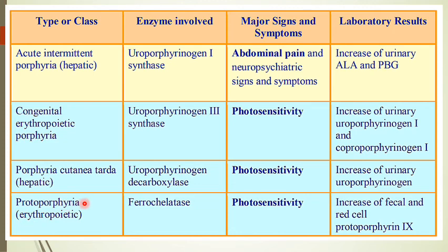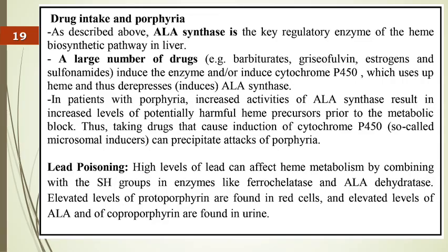Protoporphyria results from deficiency of ferrochelatase (also called heme synthase — the last mitochondrial enzyme). It presents with photosensitivity and increased protoporphyrin type IX in stools and red blood cells. Several drugs affect ALA synthase (the key enzyme): barbiturates, griseofulvin (antifungal), estrogen, sulfonamide antibiotics, and other drug groups.